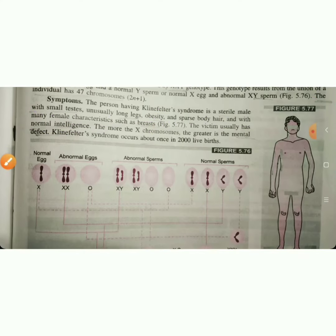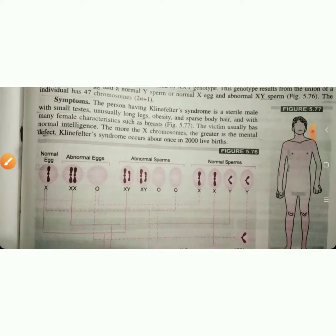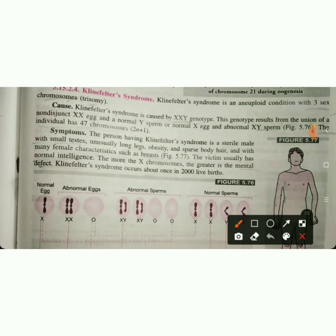So this is Klinefelter syndrome. What does it mean? It's a sterile male, but with female characteristics. You should definitely write this down. The cause is XXY genotype with 47 chromosomes, and the symptoms as described.